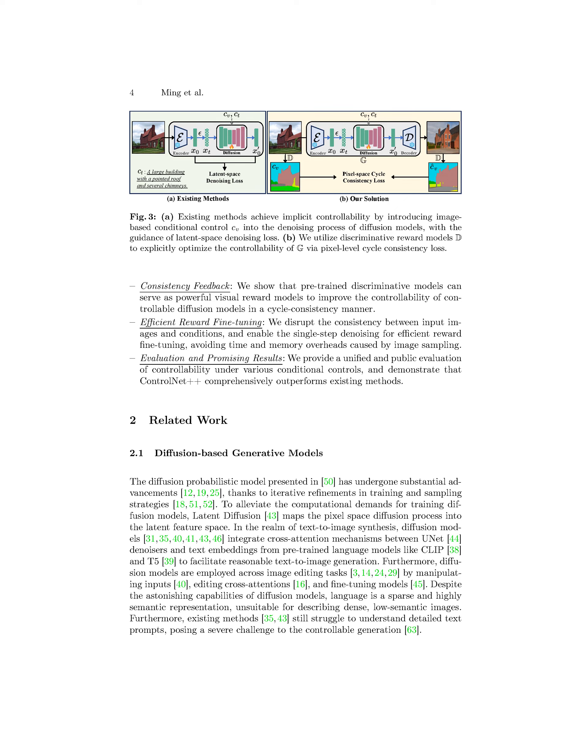We propose a novel approach inspired by CycleGAN, utilizing pre-trained discriminative models to optimize cycle consistency loss for better controllability at the pixel level. By disrupting the consistency between input images and conditions and enabling single-step denoising, we demonstrate more efficient reward fine-tuning, leading to improved controllability in models like ControlNet++.